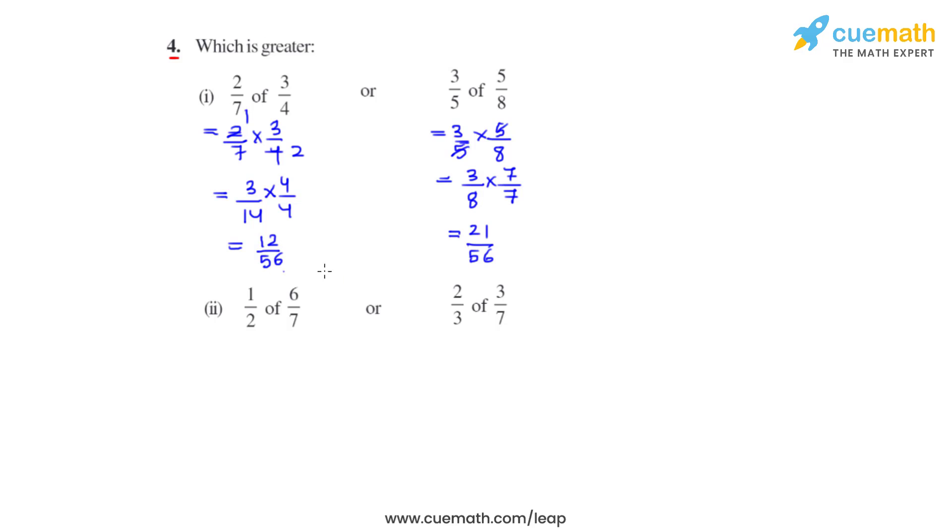The denominators are now the same. The numerators are 12 and 21. Since 21 is greater than 12, we can say that 21 over 56 is greater than 12 over 56. Therefore, 3 fifths of 5 over 8 is greater than 2 over 7 of 3 over 4.